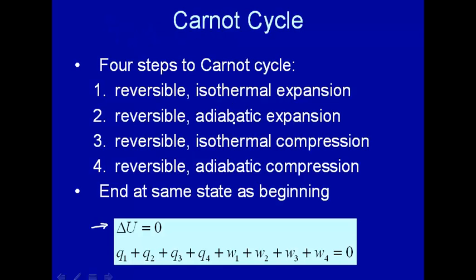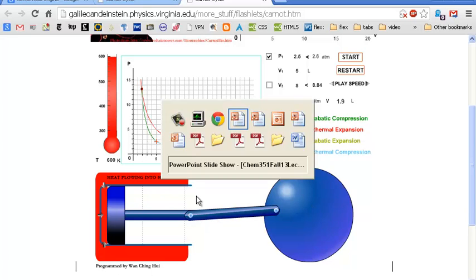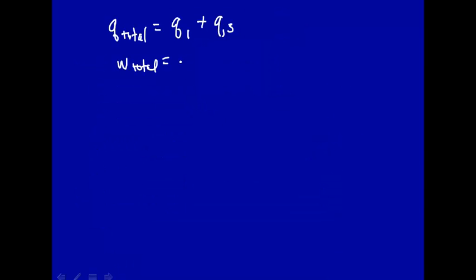Let's look at the total work. You're doing work on or by the system in both steps. The expansion in both isothermal and adiabatic, you're doing work here, and the compression. So the work term, the total work, has four terms. Work done the first step, second step, third step, plus fourth step.